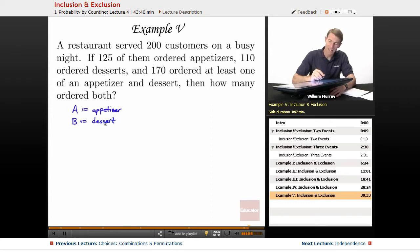And we're asked, how many ordered both? Both means we're looking for people that ordered an appetizer and a dessert. So, that's the intersection. So, we're trying to calculate how many people ordered both.